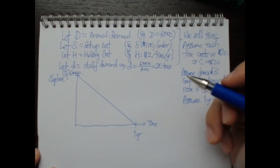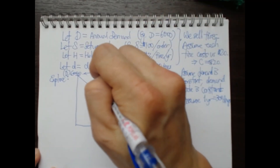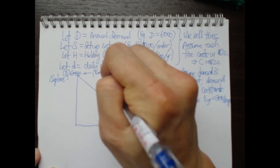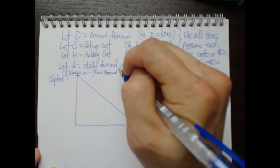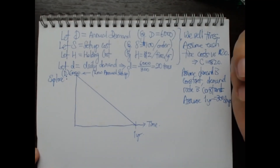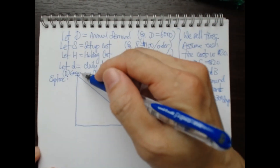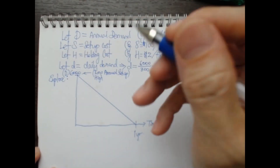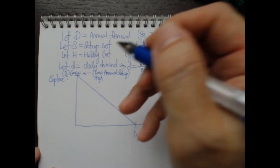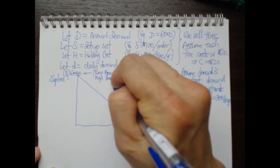This strategy of ordering once per year — buying all 6,000 tires upfront — means we incur the setup cost only one time, which is as low as it can get. However, we require a very large warehouse space for 6,000 tires, so we'll incur very high holding costs annually.